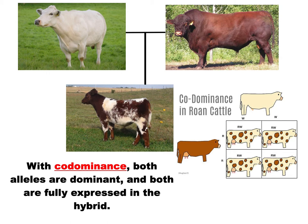If one cow is big-R, big-R and the other is big-W, big-W, all their babies are going to be big-R, big-W — every single one will be roan. If we cross two of the roans, we get a mixture: some will be white, some will be brown, and some will be roan. That's co-dominance.